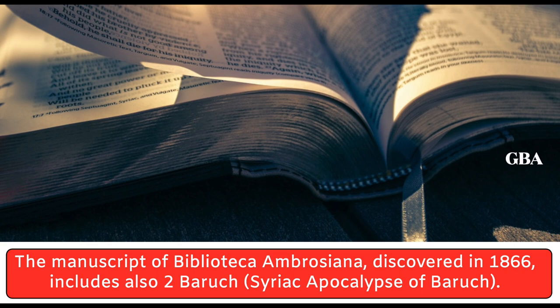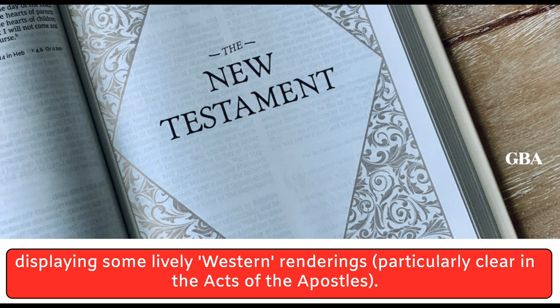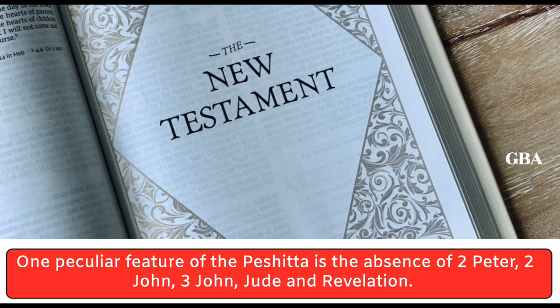The Peshitta version of the New Testament shows a continuation of the tradition of the Diatessaron and Old Syriac versions, displaying some lively Western renderings, particularly clear in the Acts of the Apostles. One peculiar feature of the Peshitta is the absence of 2 Peter, 2 John, 3 John, Jude, and Revelation.